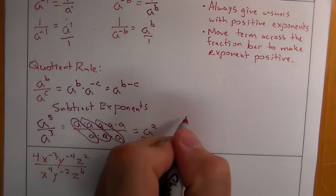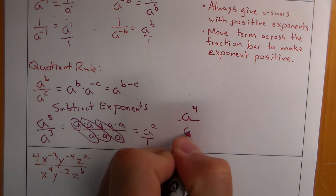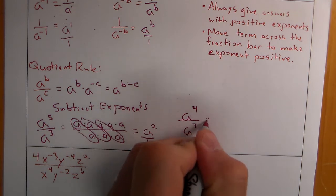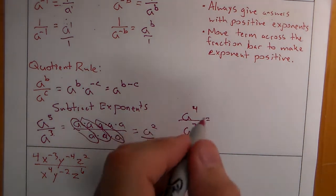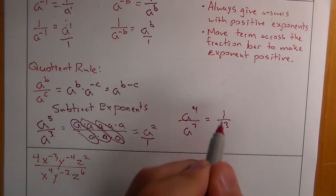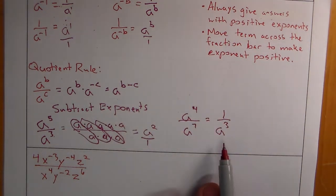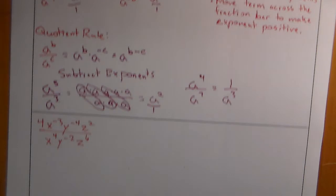Something like a to the fourth over a to the seventh — instead of subtracting 4 minus 7, we can say the bottom has more. It has three more, and that allows us to simplify. We'll use both of those approaches as we go through simplifying with negative exponents and division.